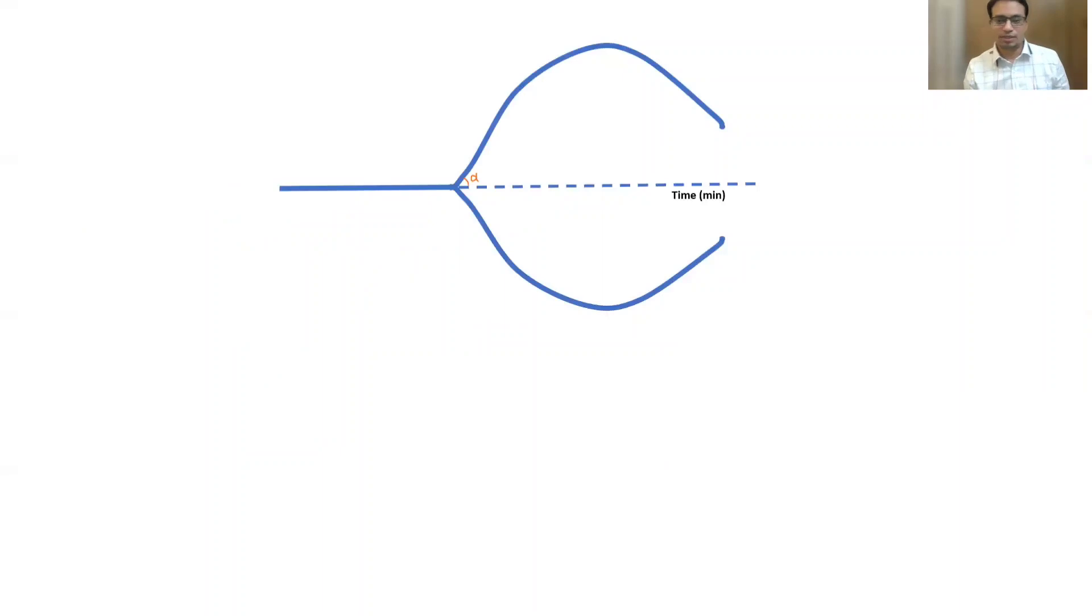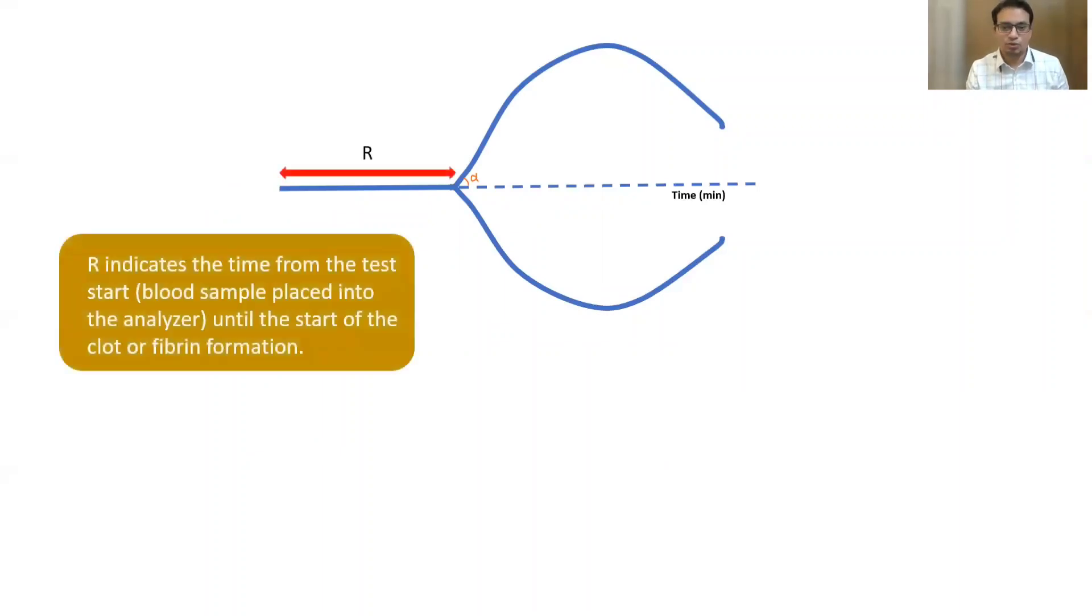Now let's understand various terms in TEG. First is the R time. R time is the time from when blood is placed in the cup on TEG machine until the initiation of fibrin formation, a two millimeter amplitude on the trace, and this reflects the concentration of clotting factors in the plasma.